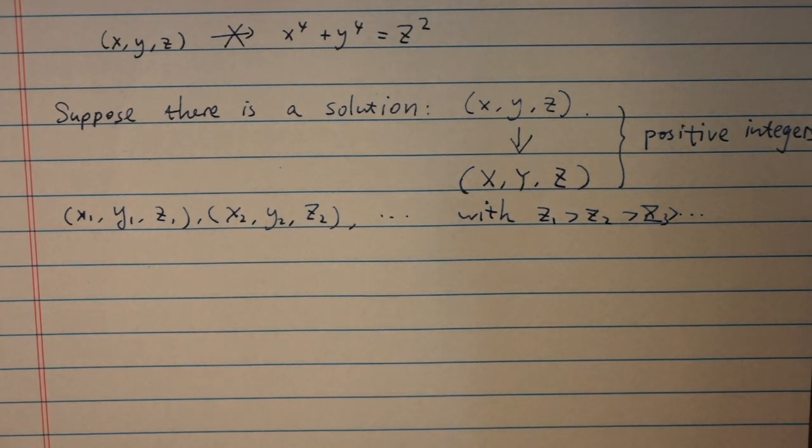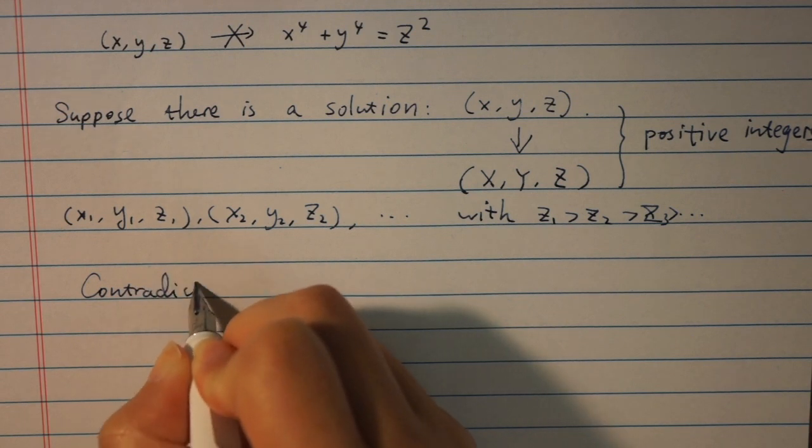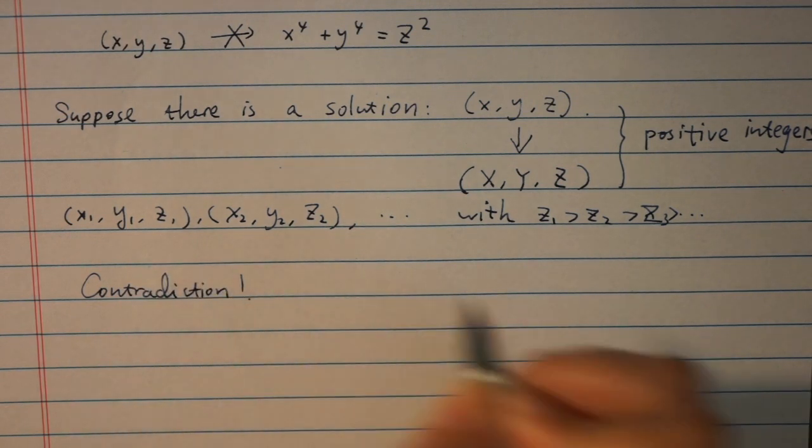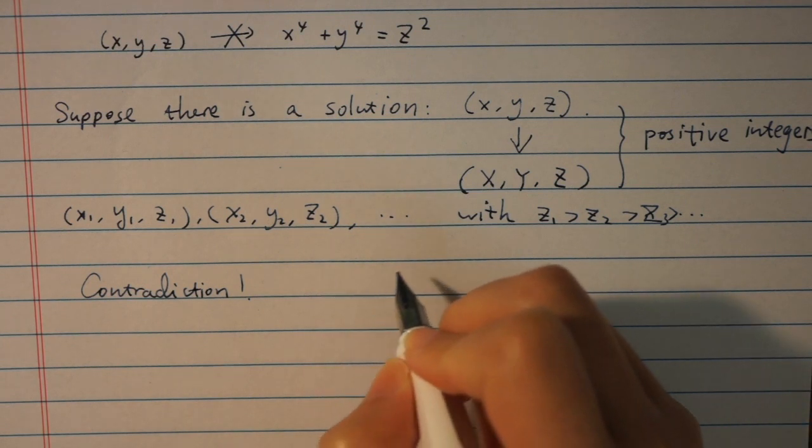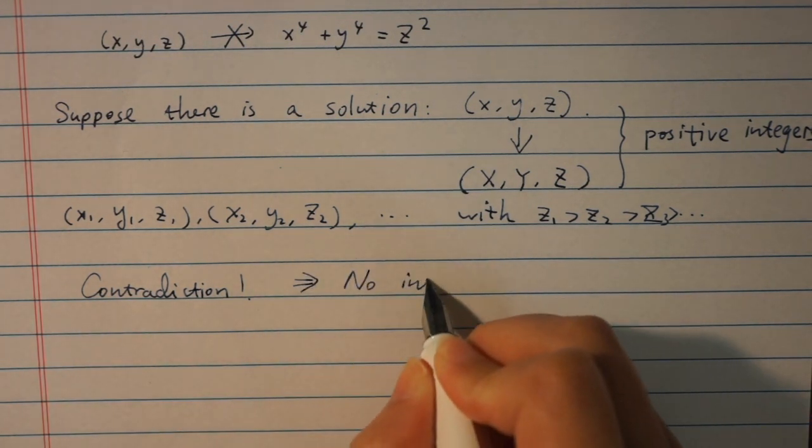This list is going to an end because a decreasing list of positive integers cannot continue forever. A contradiction exists, therefore the equation will not have integer solutions.